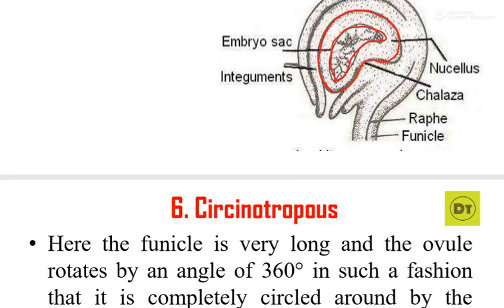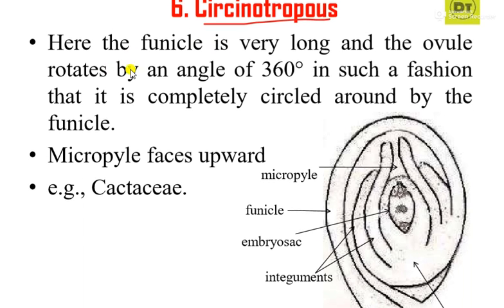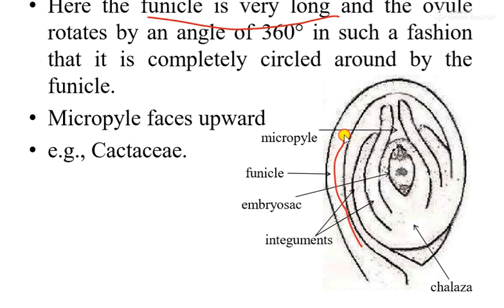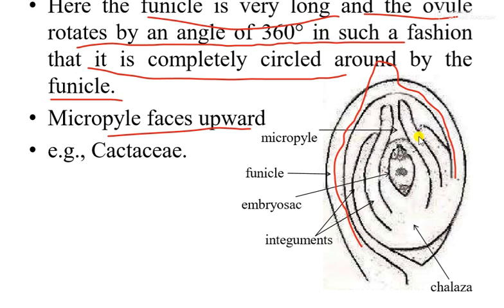Now let's move on to the last type of ovule, which is known as circinotropous. The term is related to something circular. In this type, the funicle is very long — this entire structure you see is the funicle. The ovule rotates by an angle of 360 degrees in such a fashion that it is completely circled around by the funicle. The micropyle faces upwards. This type of ovule is common in cactus.